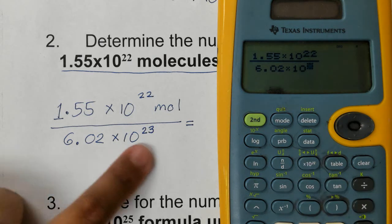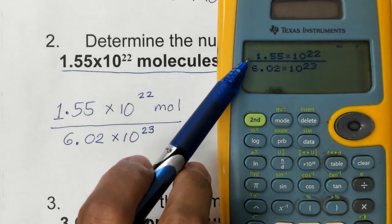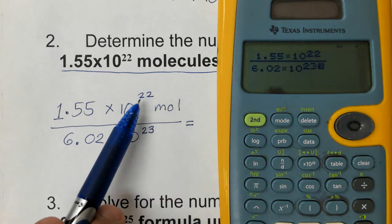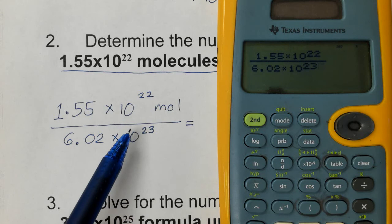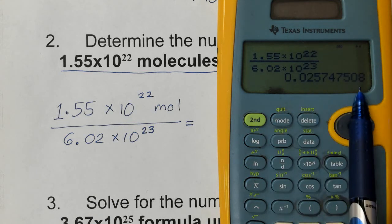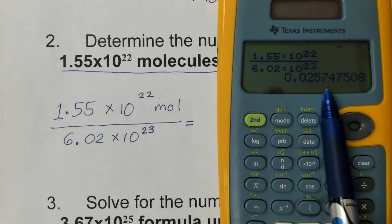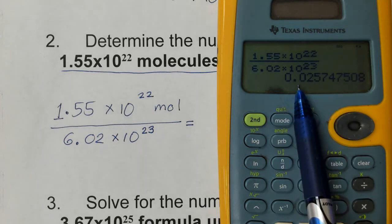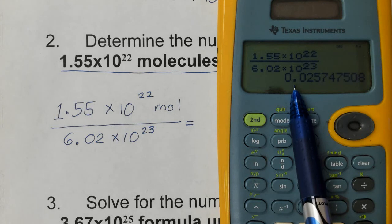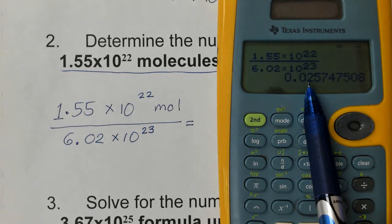And then once we've checked that we have inputted everything correctly, the correct exponents most especially, check that. Now if it's accurate, we are ready to press enter or equals on the calculator. And you're going to see all these numbers here. Now, most of you have placed something that's not this value. If you see zeros, do not ignore them. That's part of the answer, so retain them, copy them where they are.